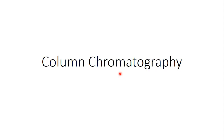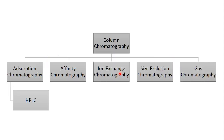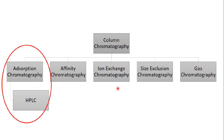When we say column chromatography we might be mentioning several types of it: adsorption, affinity, ion exchange, size exclusion, or gas chromatography — all of them are types of column chromatography. I'm going to speak only about the adsorption chromatography and its automated technique, the HPLC.